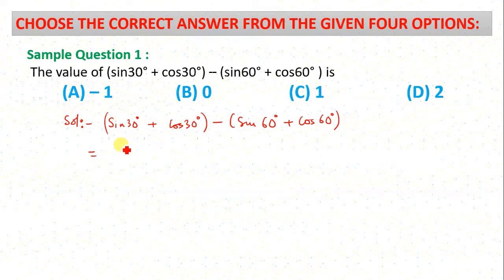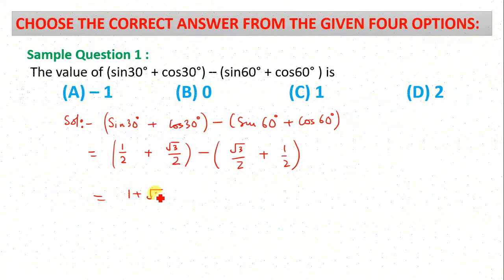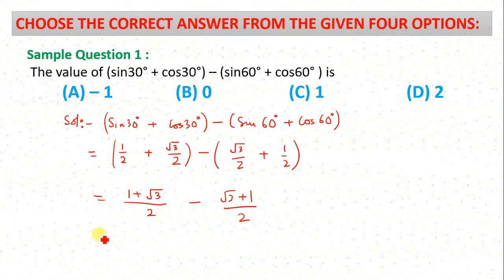sin 30° is 1/2. cos 30° is sin 60° = √3/2. Minus sin 60° = √3/2, plus cos 60° = 1/2. If we add 1/2 + √3/2 minus √3/2 + 1/2, it will cancel out. Your answer is zero. So the correct option is option B.